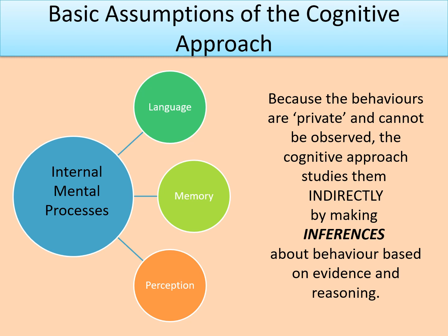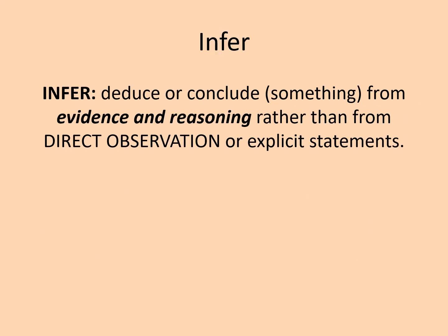The basic assumptions of the cognitive approach are that it wants to study internal mental processes. This means it's moved on from the behaviourists, who would only study observable behaviours. The cognitive approach contrasts with that and wants to study non-observable behaviours — internal mental processes like memory, perception and thinking. Because these are private and cannot be observed, the cognitive approach studies them indirectly by making inferences based on evidence and reasoning. Inferences is a really important word: to infer something means to deduce or conclude something from evidence and reasoning rather than from direct observation.